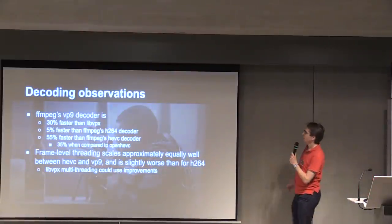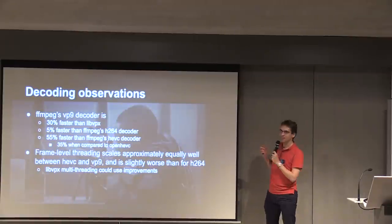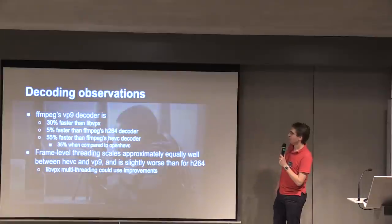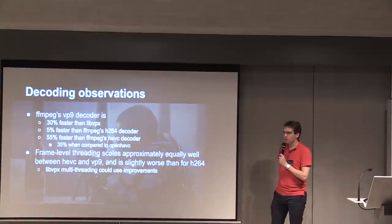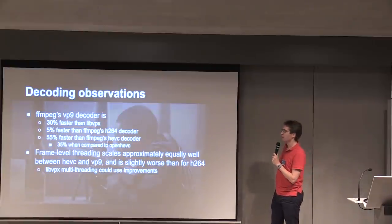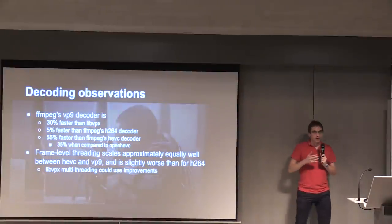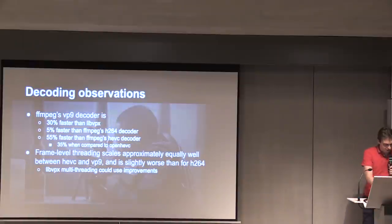Closing remarks for decoding observations: FFmpeg is cool. We have a decoder that's faster than libvpx. At a single thread it's a little bit faster than x264. With threading it gets slower. Versus HEVC, it's a lot faster. That's a really cool decoder and I thought it was a really cool project to do.